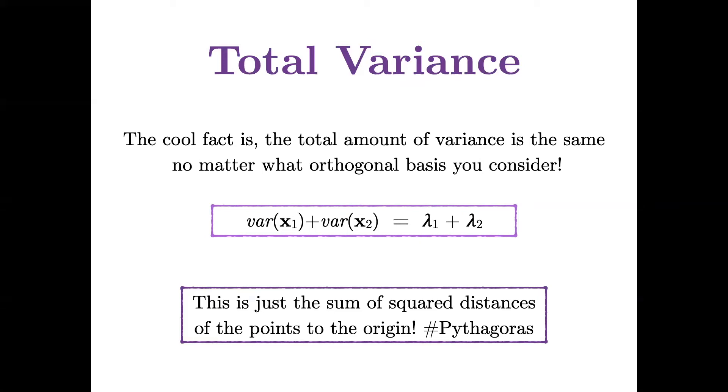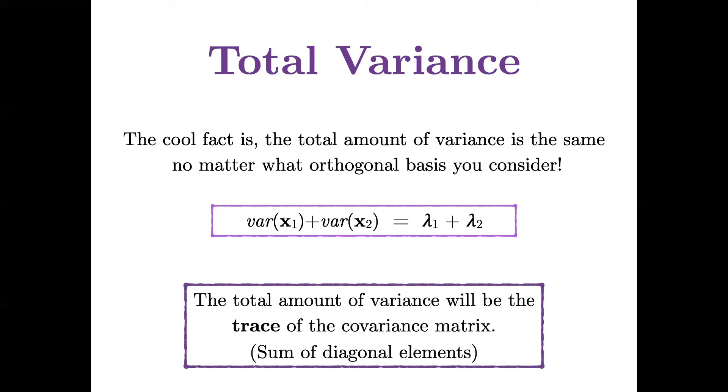And the reason is it's just the sum of the squared distances of each point to the origin. And so Pythagorean theorem tells me that it doesn't matter what kind of right triangle I draw. The hypotenuse of that triangle is going to be the sum of squared, well, the square root. So the square of that hypotenuse will be the sum of the squared lengths of the legs of the triangle. And that total amount of variance will be the trace of the covariance matrix.